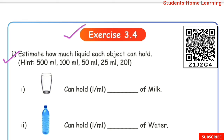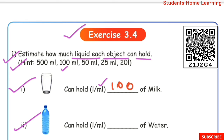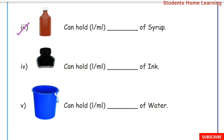Exercise 3.4: Estimate how much liquid each object can hold. 1. Glass tumbler — it holds in milliliters, not liters. The glass tumbler volume is 100 ml. 2. Water bottle — answer is in milliliters: 500 ml. 3. Syrup bottle — answer in milliliters: 50 ml.